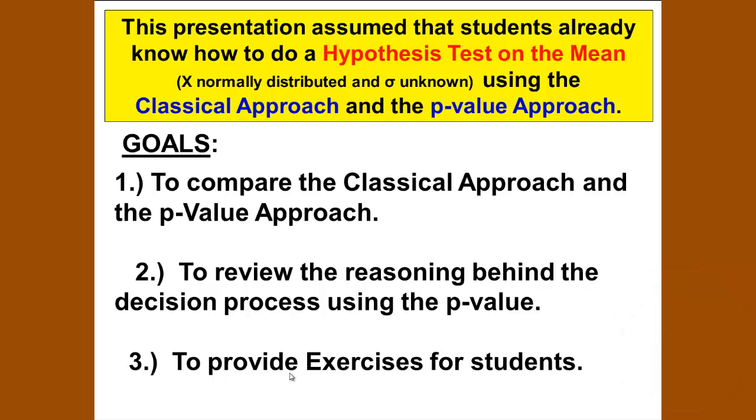To remind you what we are trying to do, this presentation assumes that the students already know how to do hypothesis testing on the mean using the classical approach and the p-value approach, that x is normally distributed and that sigma is unknown. Our goals are to compare the classical approach and the p-value approach and to review the reasoning behind the decision process for using the p-value, and to provide some exercises for the student.